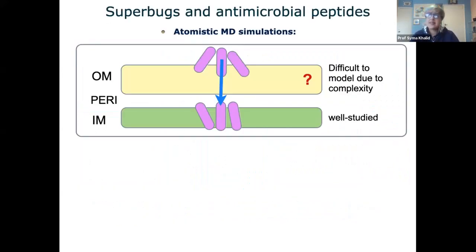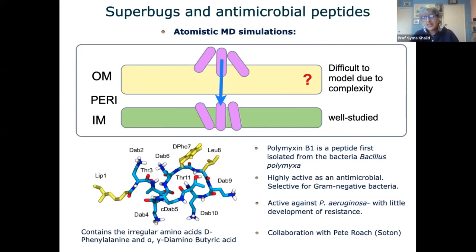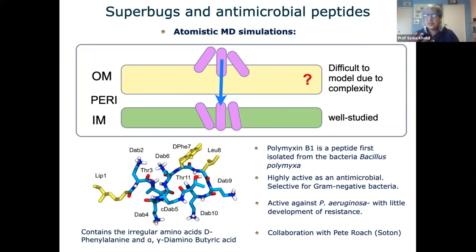We first started off by looking at antimicrobial peptides. These were a hot topic when we started and they still are, and they also tend to be a lot smaller than other proteins, so they were more tractable with the resources we had at the time. We started by looking at polymyxin B1, an antimicrobial peptide selective for gram-negative bacteria that shows very little development of resistance. It has a caterpillar shape — a ring region with a charge of plus five, making it polar and charged, and then a hydrophobic tail labeled as lip one, so it has a lipophilic tail.